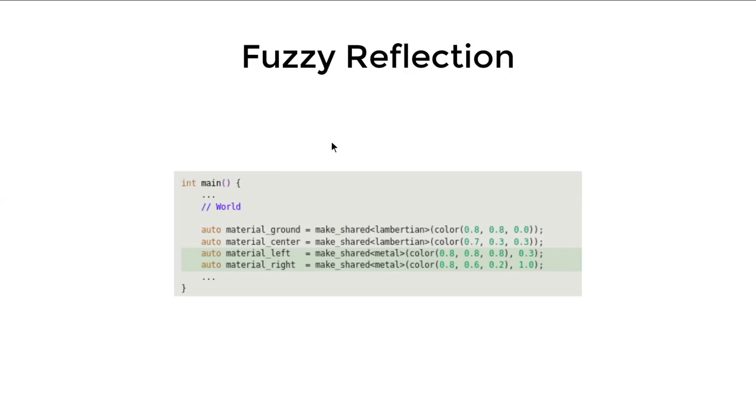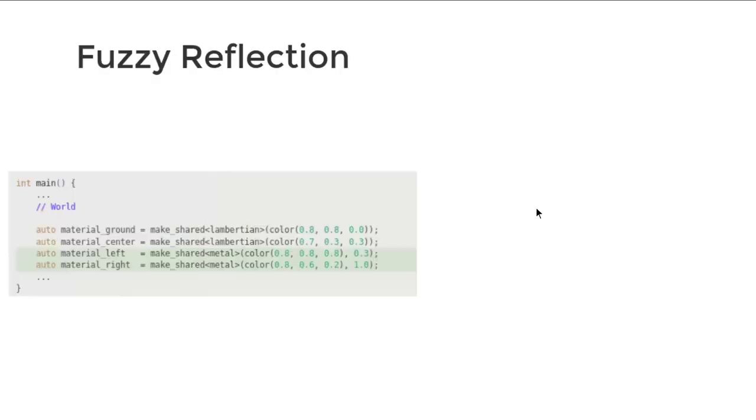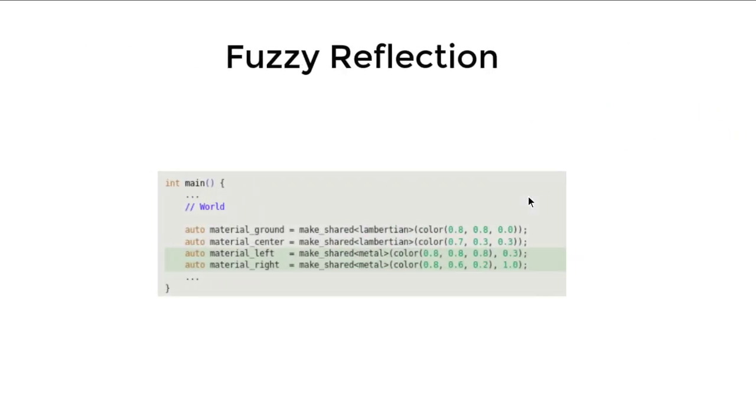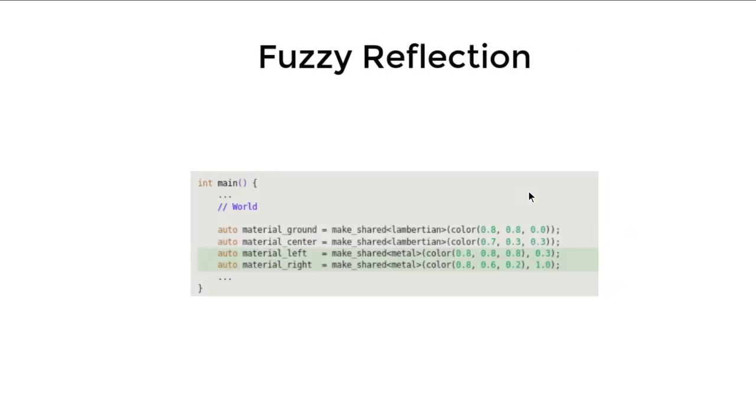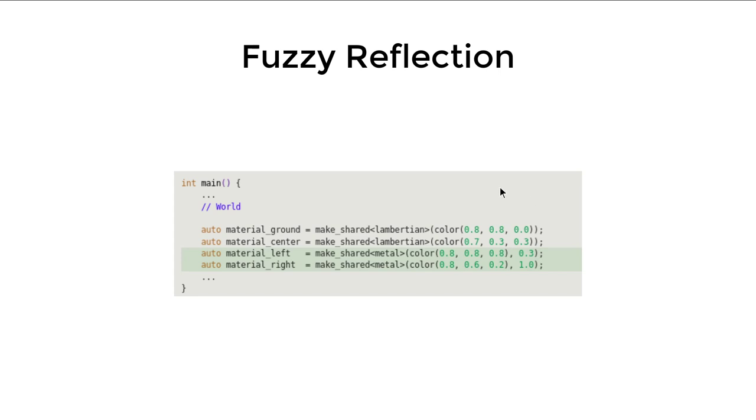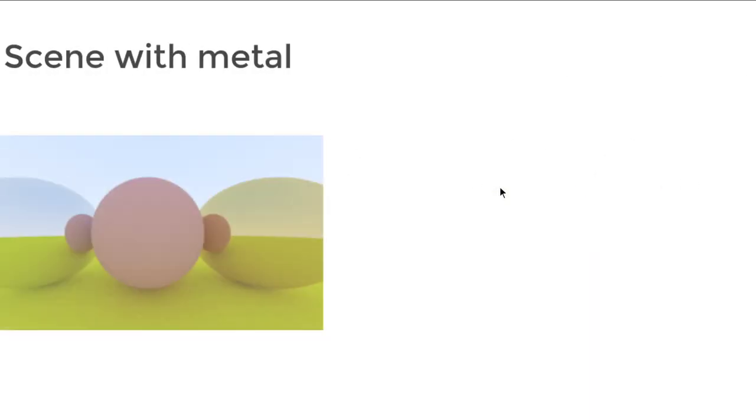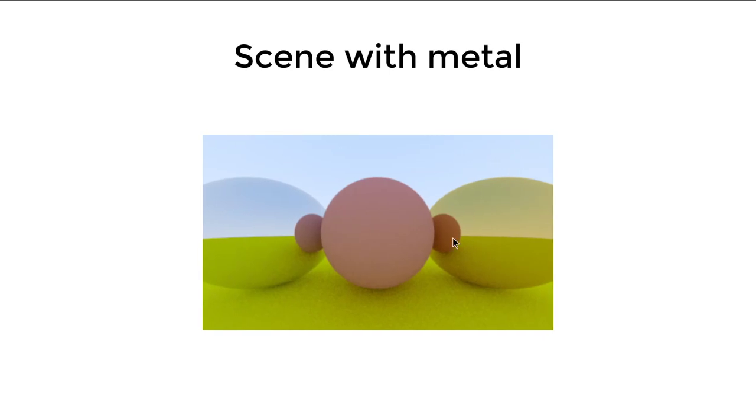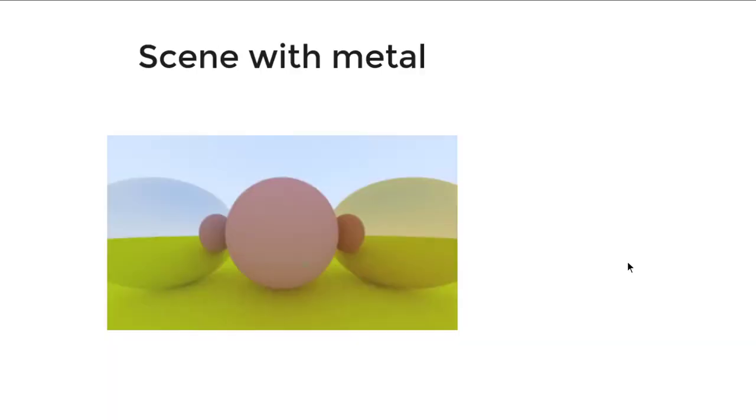We add some fuzziness into both of the materials. The left one is 0.3, and the right one is one, which is the maximum of fuzziness. So, I do not put a picture here, though I should. So, sorry about that. But the result should be that this sphere gets really fuzzy, and this sphere gets somewhat fuzzy, but not as fuzzy as this one.